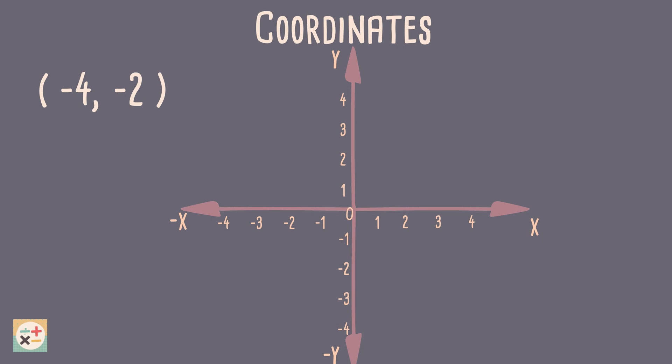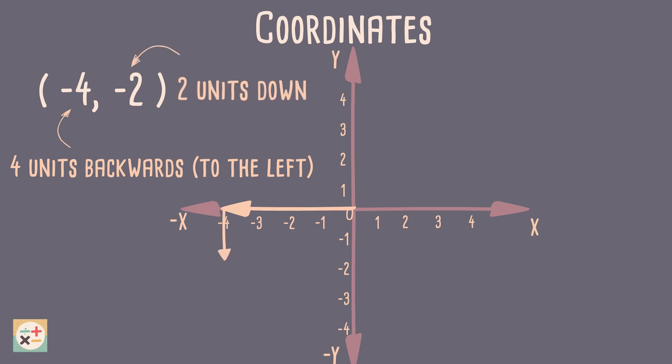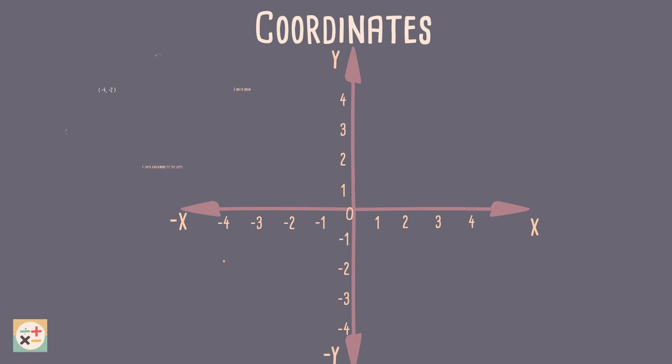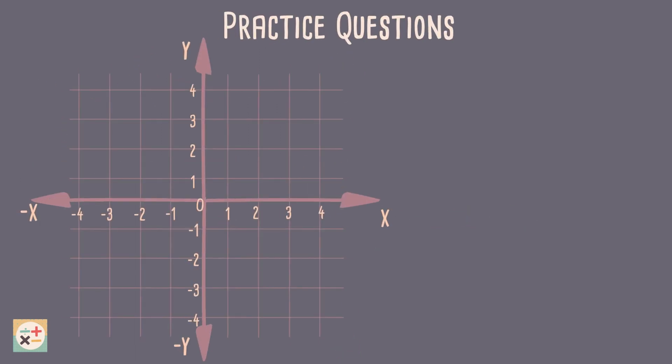To plot this point, we would move 4 units to the left on the x-axis, as this is a negative 4. We would then move 2 units down the y-axis. Have a go at these practice questions. Pause the video while you work them out.